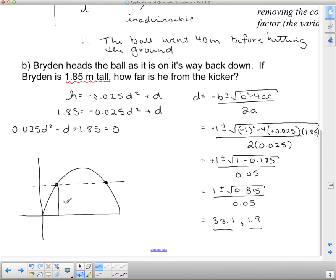So there's two parts where the ball is at 1.85, there and there, if we think of this as being 1.85 meters high. Now, when it says Bryden heads the ball on its way back down, that means that it's this one that's the issue. So this must be the 38.1. So this is the good one. This is the one that we say is inadmissible, which I'm just going to put in add down there. So, therefore, Bryden is 38.1 meters from the kicker.